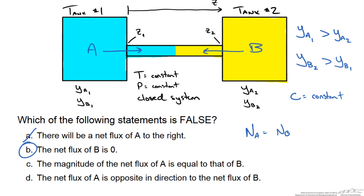So the magnitude of the A must be equal to the B and not only that, it must be in the opposite direction of B. Therefore we are saying that the net molar flux of A is equal and opposite in direction to the net molar flux of B.